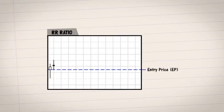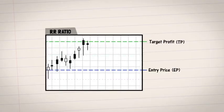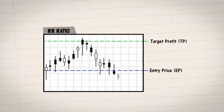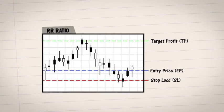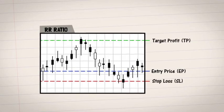First, the EP or entry price. This is the price at which you enter the trade. Next, the TP or target profit. This is the price you expect the stock to reach. Finally, the SL or stop loss. This is the price at which you will definitely get out of the position.